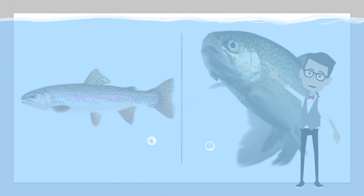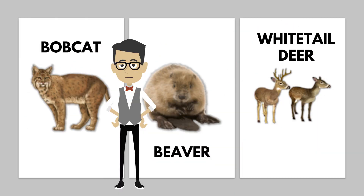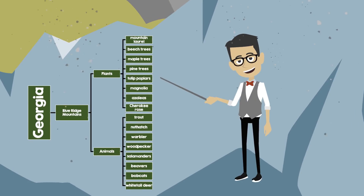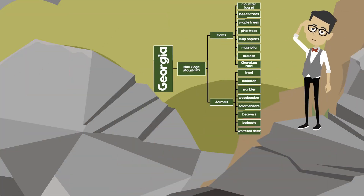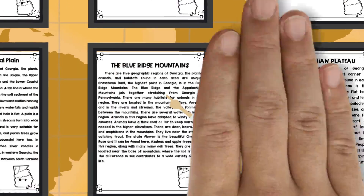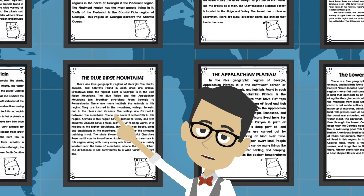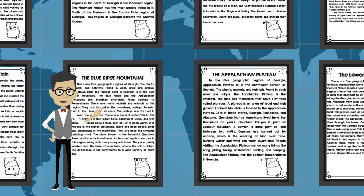The trout is a colorful fish that can be identified within this region as well. Beavers, bobcats, and white-tailed deer have also been sighted. Within the Blue Ridge Mountain region, there is a wide diversity of plants, such as the mountain laurel, beech trees, maple trees, pine trees, tulip poplars, magnolia, and the Cherokee rose. Azaleas and apple trees are in this region as well, along with many oak trees, mainly located near the base of mountains where the soil is richer.